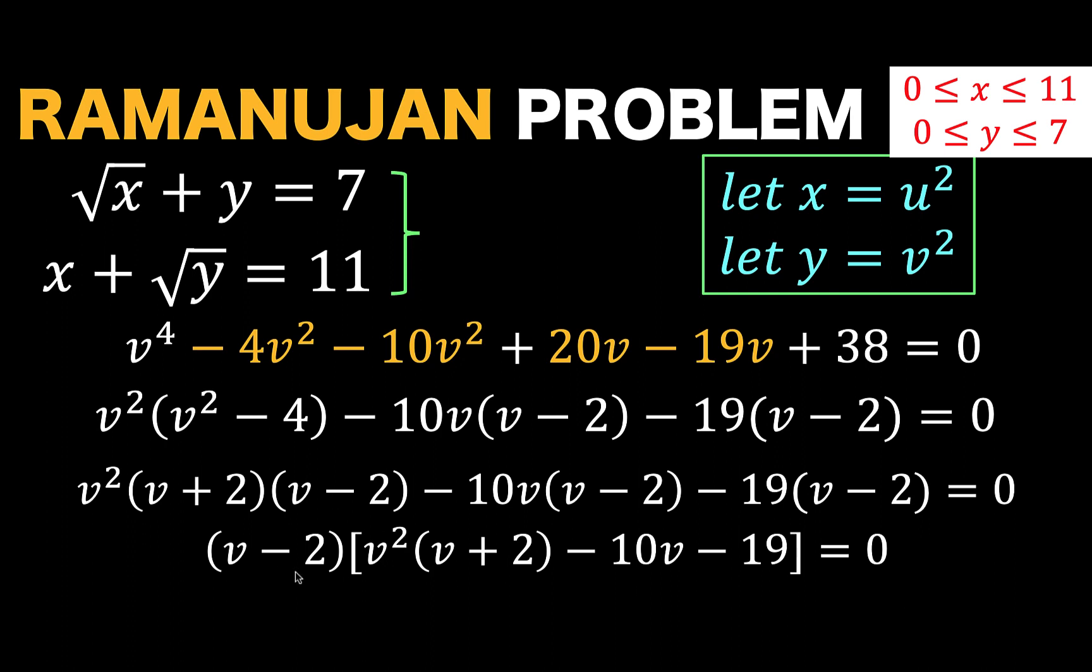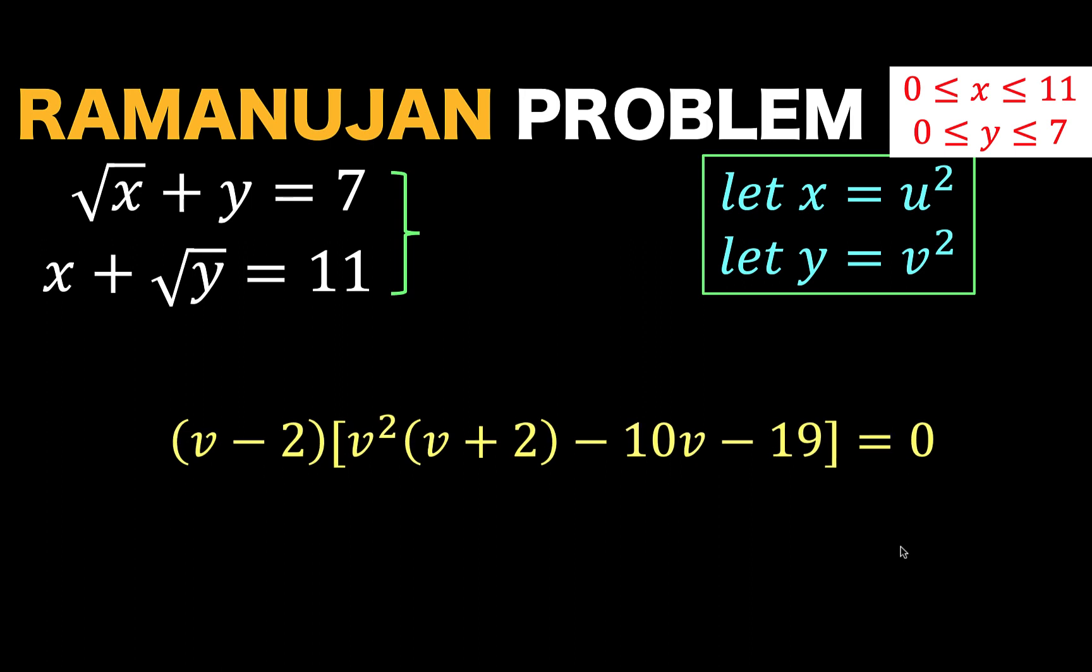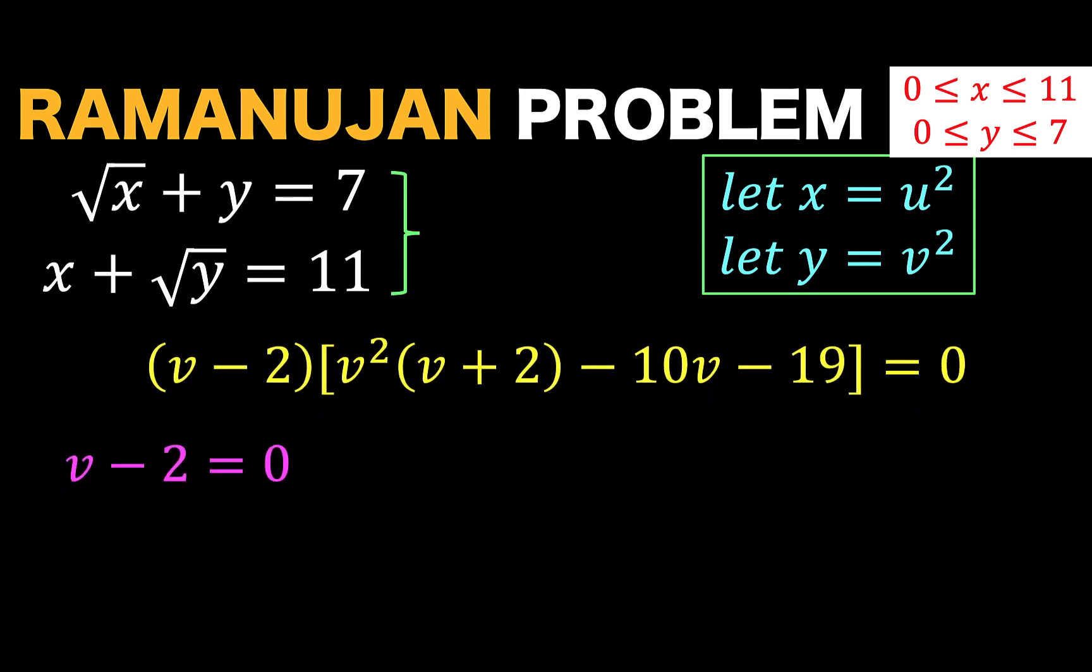Factoring out v minus 2, what's left here is v squared times v plus 2. Factoring out v minus 2 here, what's left is minus 10v. Factoring out v minus 2, what's left is minus 19, then equals 0 at the right side. We have two factors whose product is 0. So, we can now split these two factors. Each one is equal to 0. So, v minus 2 equals 0. And the other factor equals 0.